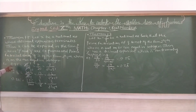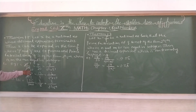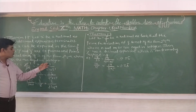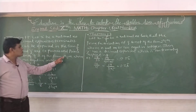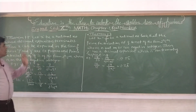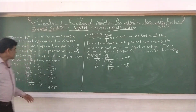For example, look at 0.35. 0.35 means 35 upon 100. Agar 35 upon 100 ko hum reduce karenge to 7 upon 20. Ab isko agar denominator explain karenge to 7 upon 2^2 into 5^1 — 2^n and 5^m mil gaya hai. To yah aapka terminating decimal hai.